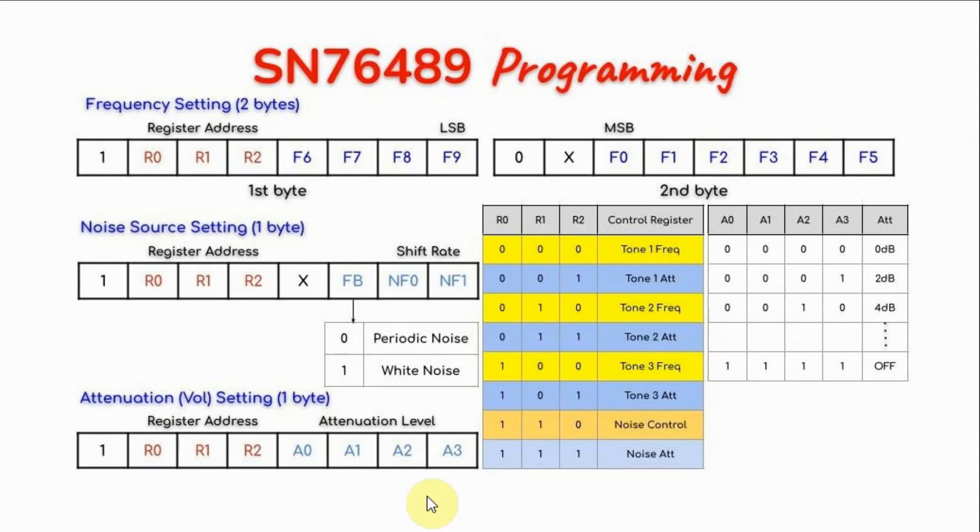So, for example, if we want to set the volume of channel 1 to maximum, in this case, it's going to be 1, and then 0, 0, 1, and then 0, 0, 0, 0, which is a hex value of 9, 0.